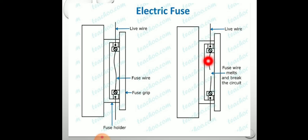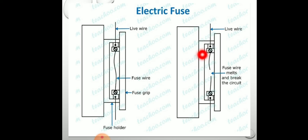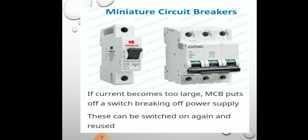When there is high current, the fuse wire melts and breaks the circuit — there is no more passing of electric current. Always the fuse wire is connected in the live wire only; only the live wire has to be passed through the electric fuse. When there is high current, the fuse wire melts off and breaks the circuit, preventing damage to the electric circuit.